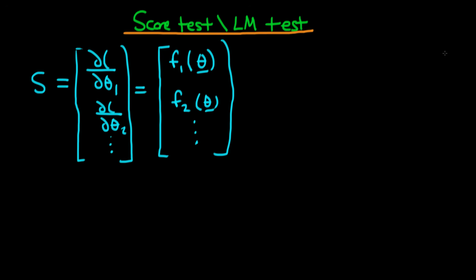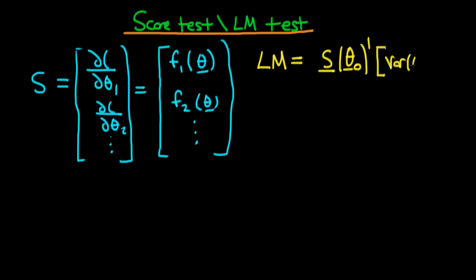What about the particular form of the score test? I'll call this test statistic LM. In the multivariate case, LM is given by the score vector evaluated at the parameter values under the null hypothesis — at θ₀ — transposed, times the inverse of the variance of our parameter estimates evaluated at θ₀, all times the score vector evaluated at θ₀. Under the null hypothesis, this is chi-square distributed with q degrees of freedom.